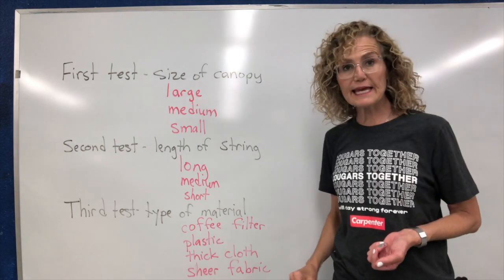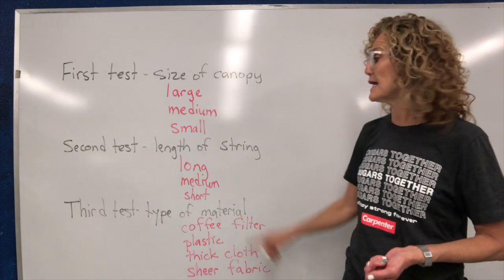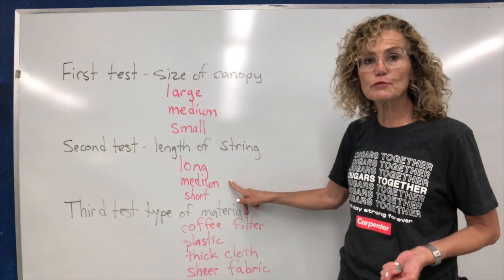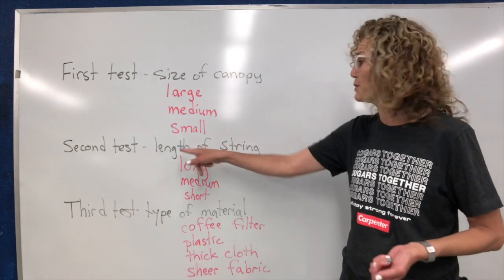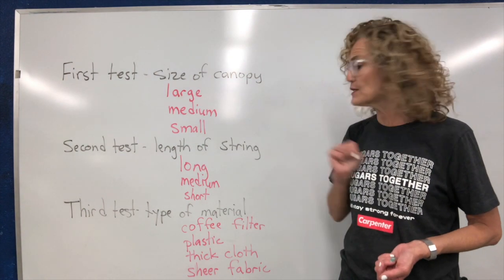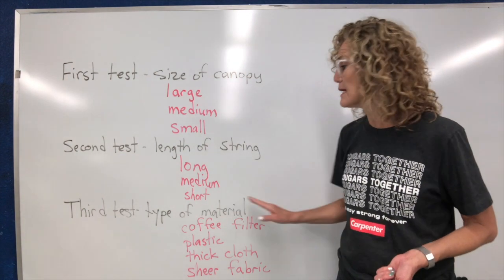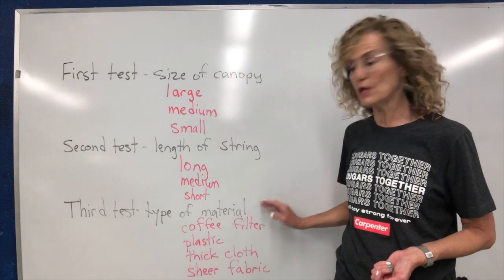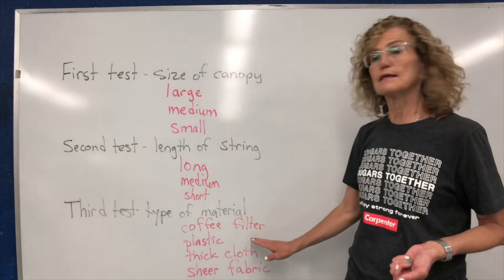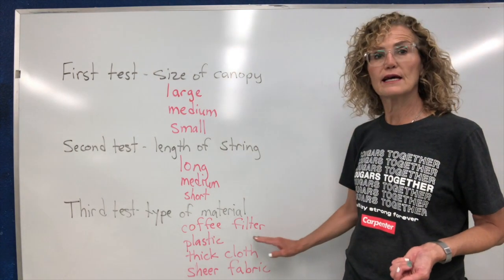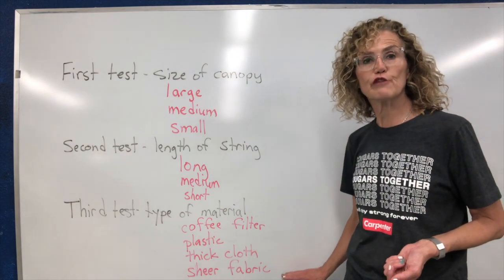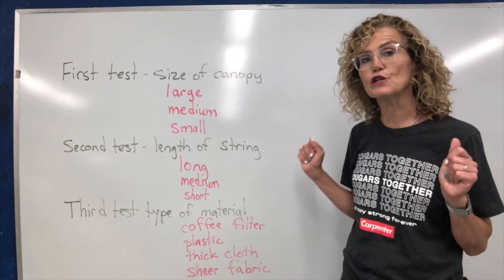On the second test I'm going to test a long string, a medium string, and a short string — so that's the length of the string. The third test is going to be the type of material, and I'm going to test a coffee filter, some plastic, a thick cloth, and a sheer fabric like from a sheer curtain.